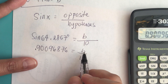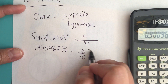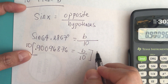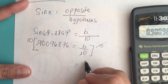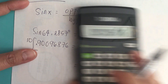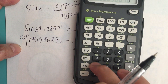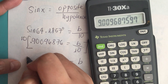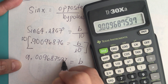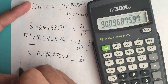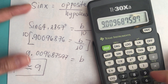So 0.900968 equals B over 10. We multiply both sides by 10, so B equals 10 times 0.900968, which gives us 9.00968 — approximately B is equal to 9.